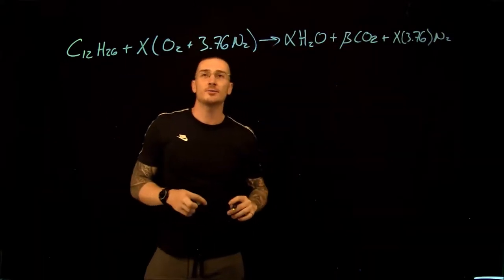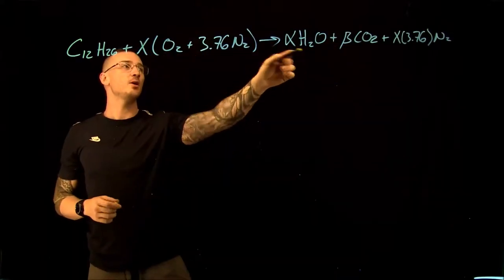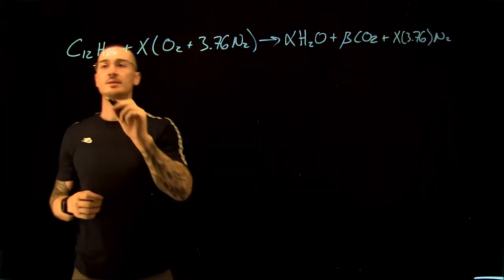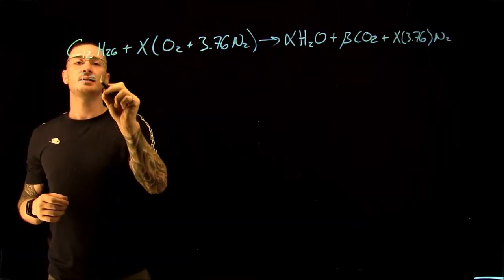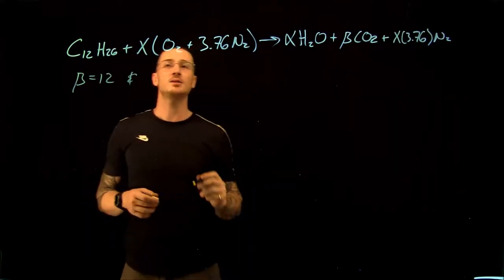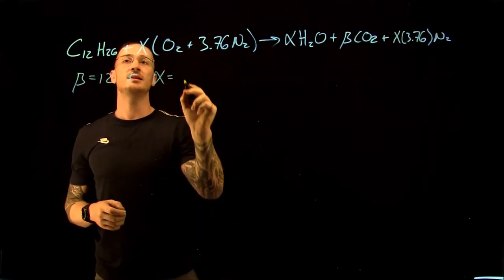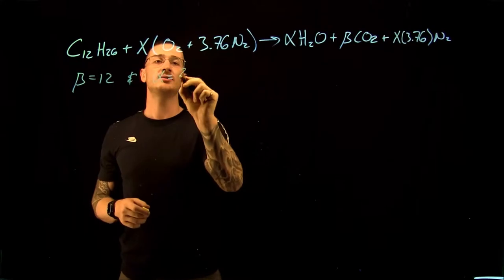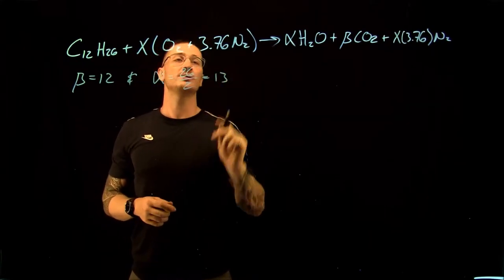If we look at our reactant side and our product side, we know we're going to need 12 carbon atoms. So we can say beta is equal to 12, and we know that for our hydrogen balance we have alpha is equal to 26 divided by 2, and this is equal to 13.